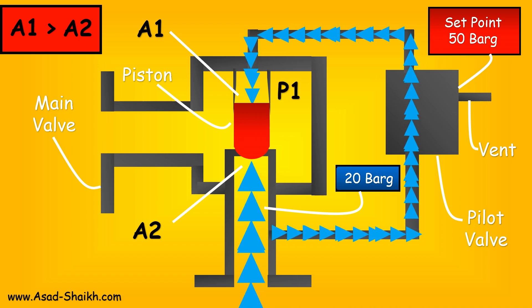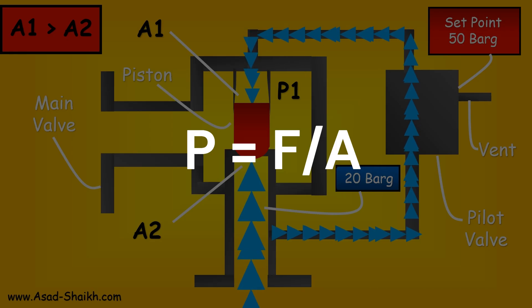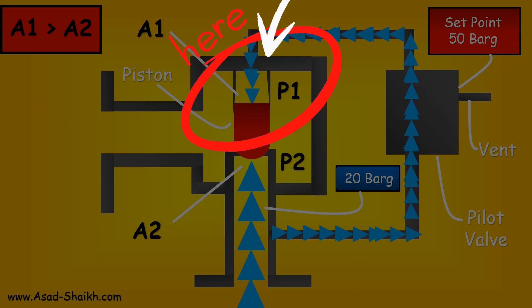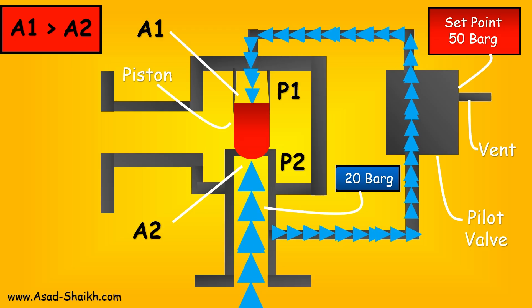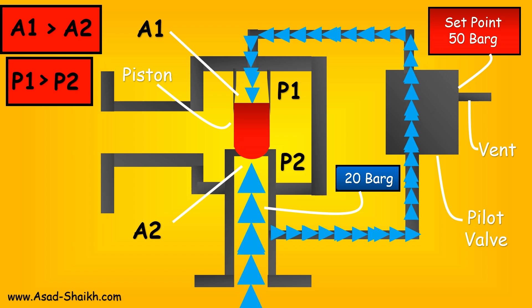Engineers have understood smartly that pressure is basically force applied on unit area. Because area A1 is bigger, pressure P1 is going to be greater than pressure P2 at the bottom of the piston. Thus P1 being greater than P2 will cause the relief valve to be in closed position when the inlet pressure is less.